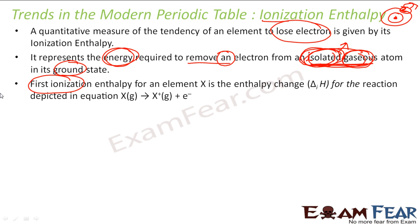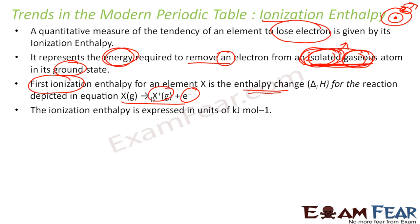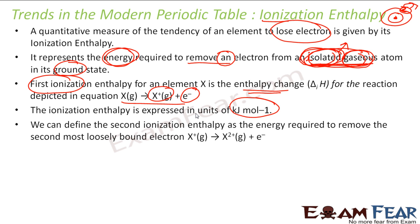Removing one electron gives the atom a positive charge. The first ionization energy for element X is the enthalpy change depicted by the reaction: any element in the isolated gaseous form loses one electron and gets a positive charge. Since this is energy, it is represented in kilojoules per mole.